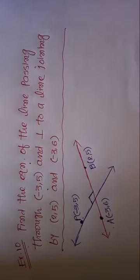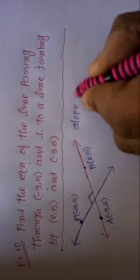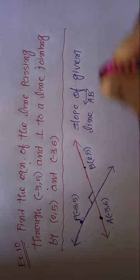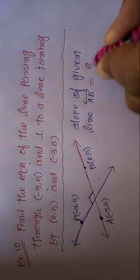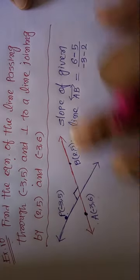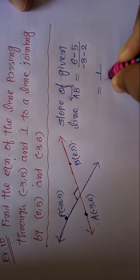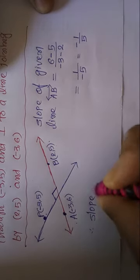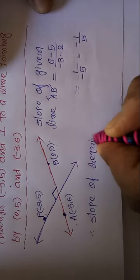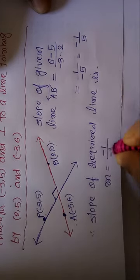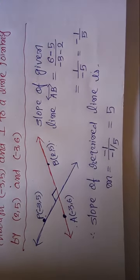The slope of the given line AB joining (2,5) and (-3,6) is the difference of y-coordinates upon difference of x-coordinates: (6 minus 5) upon (minus 3 minus 2), which gives 1 over minus 5, or minus 1 by 5.